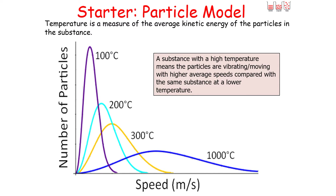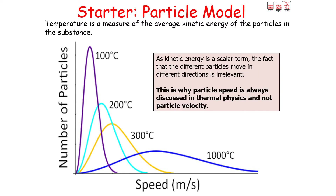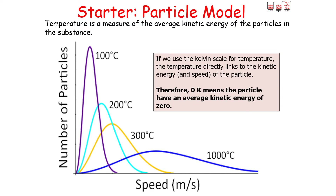A substance with a high temperature means the particles are vibrating or moving with higher speeds on average compared with a substance at a lower temperature. It's important to note that as kinetic energy is a scalar term, the fact that different particles are moving in different directions is irrelevant, which is why particle speed — not velocity — is always discussed in thermophysics. If we use the Kelvin scale, temperature directly links to the kinetic energy and speed of the particle, so 0 degrees Kelvin means the particles have an average kinetic energy of 0.